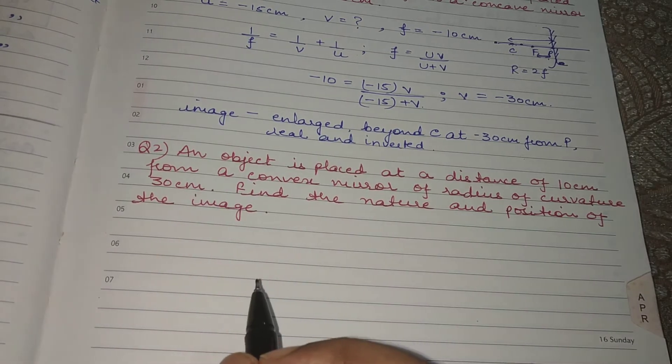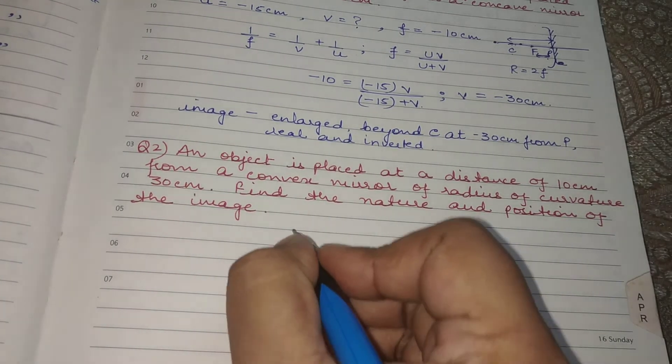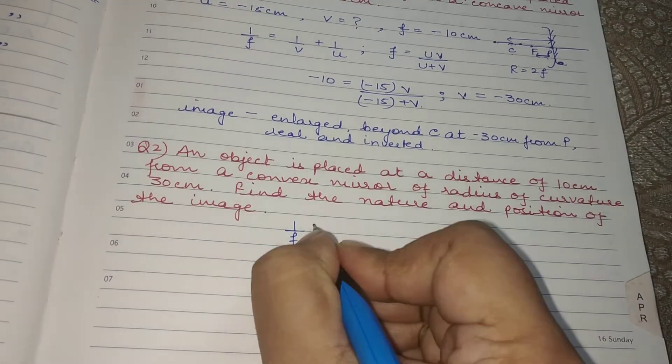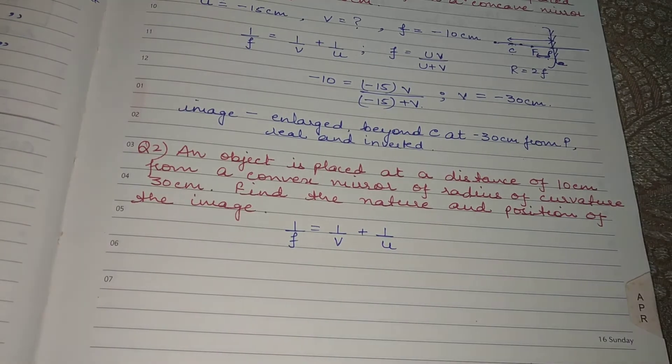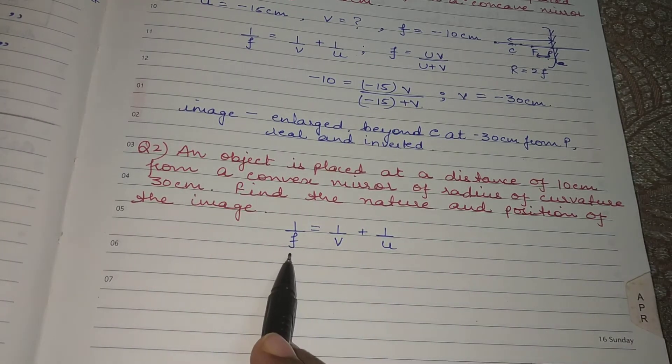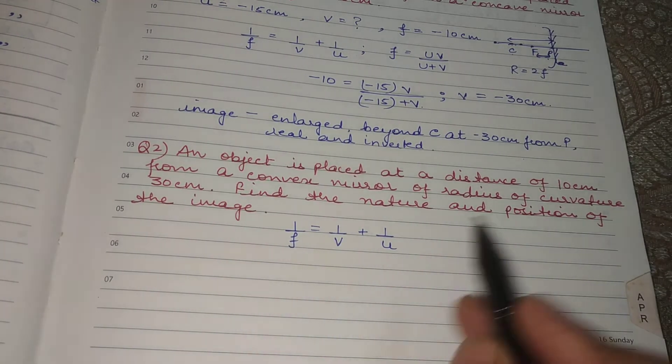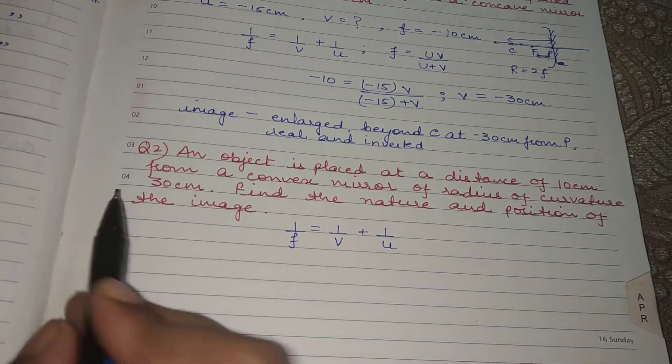Now the mirror formula is given as 1 upon f equals to 1 upon v plus 1 upon u. So in the question value of focal length is not given but the value of radius of curvature is given to us.